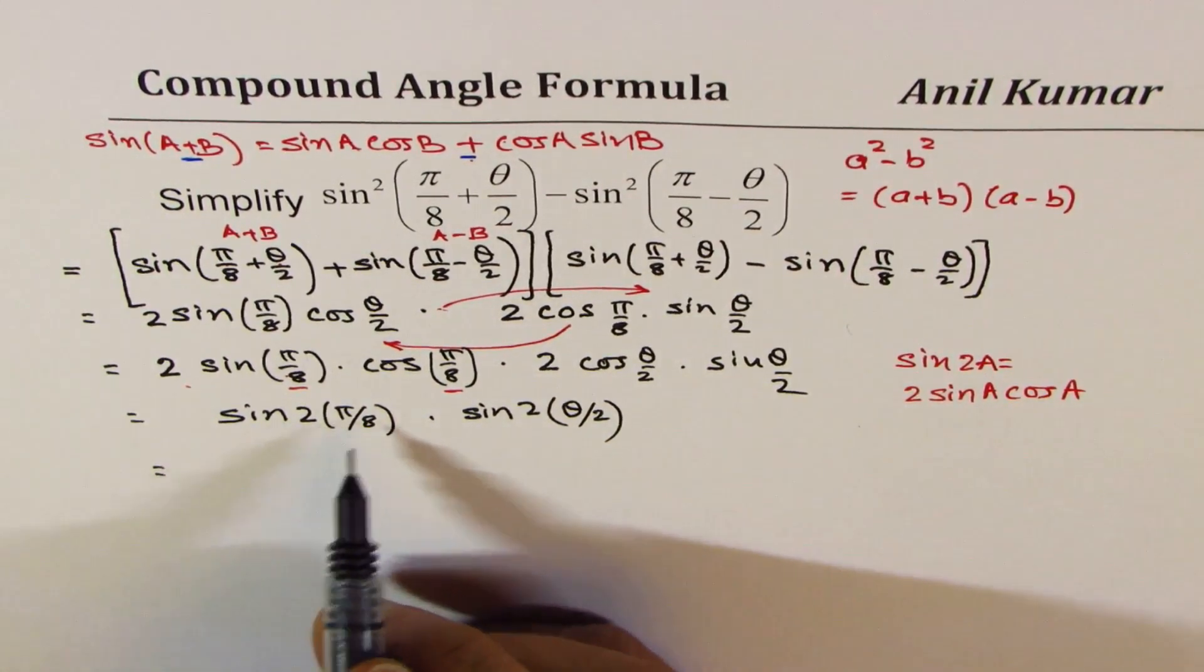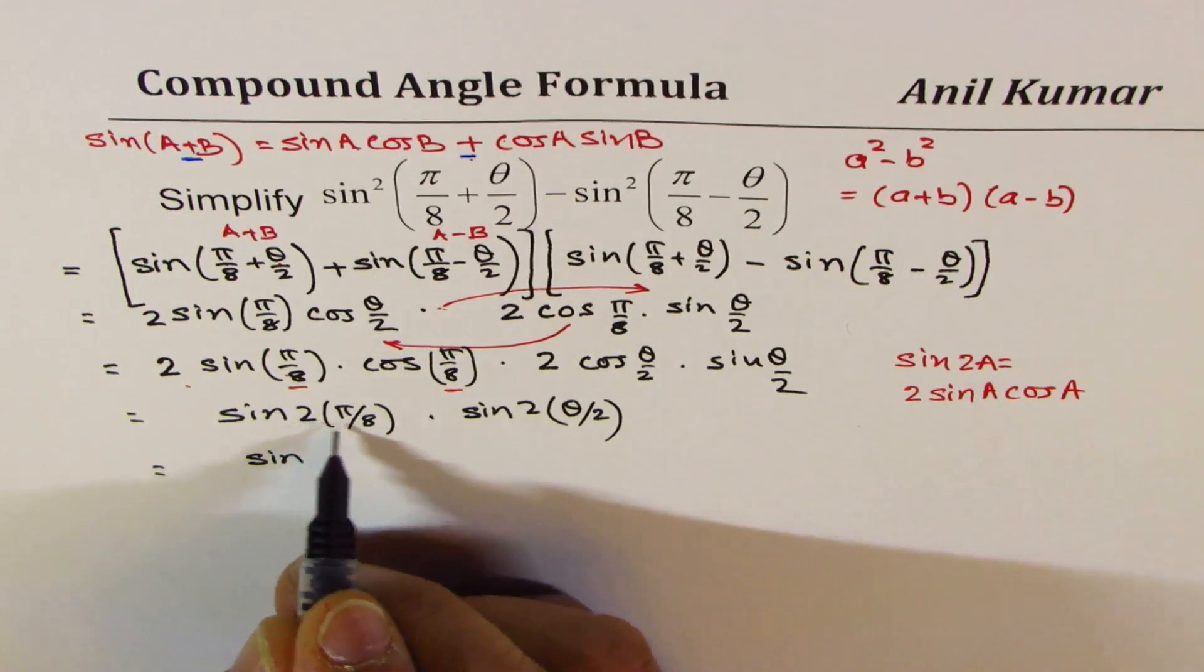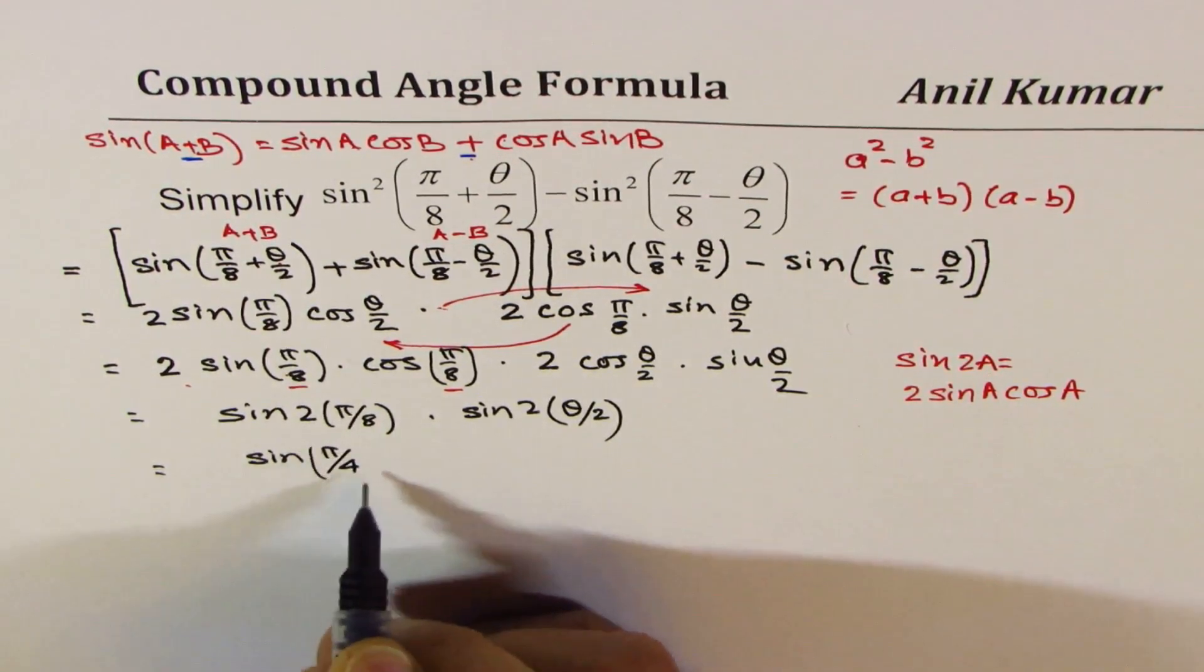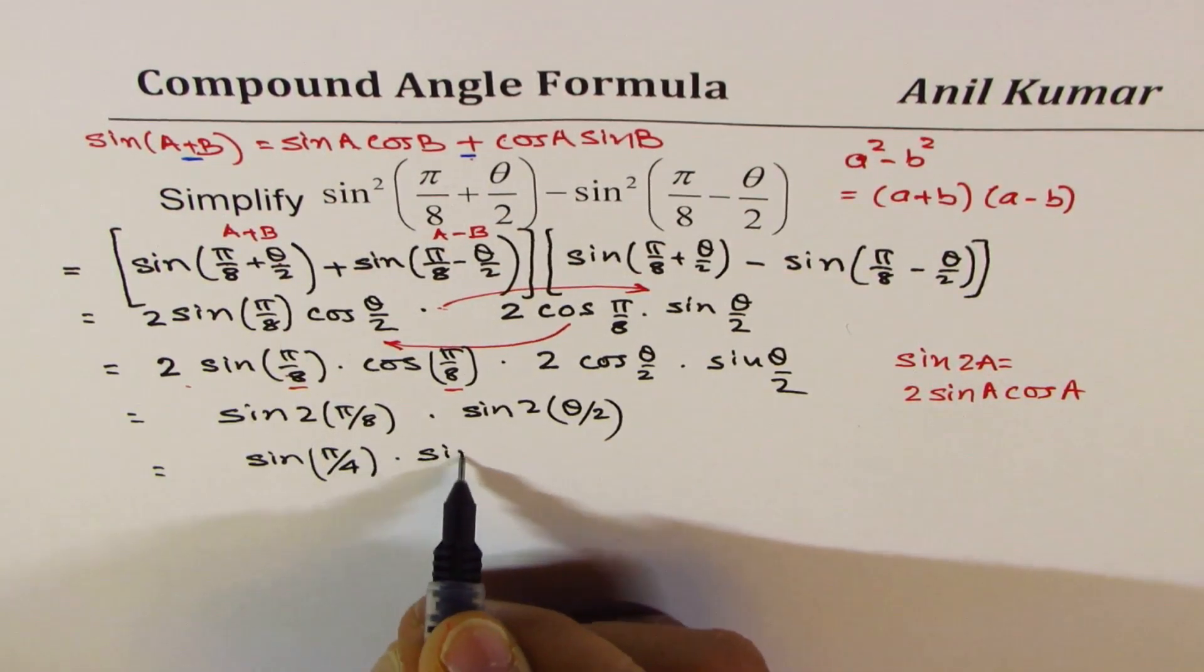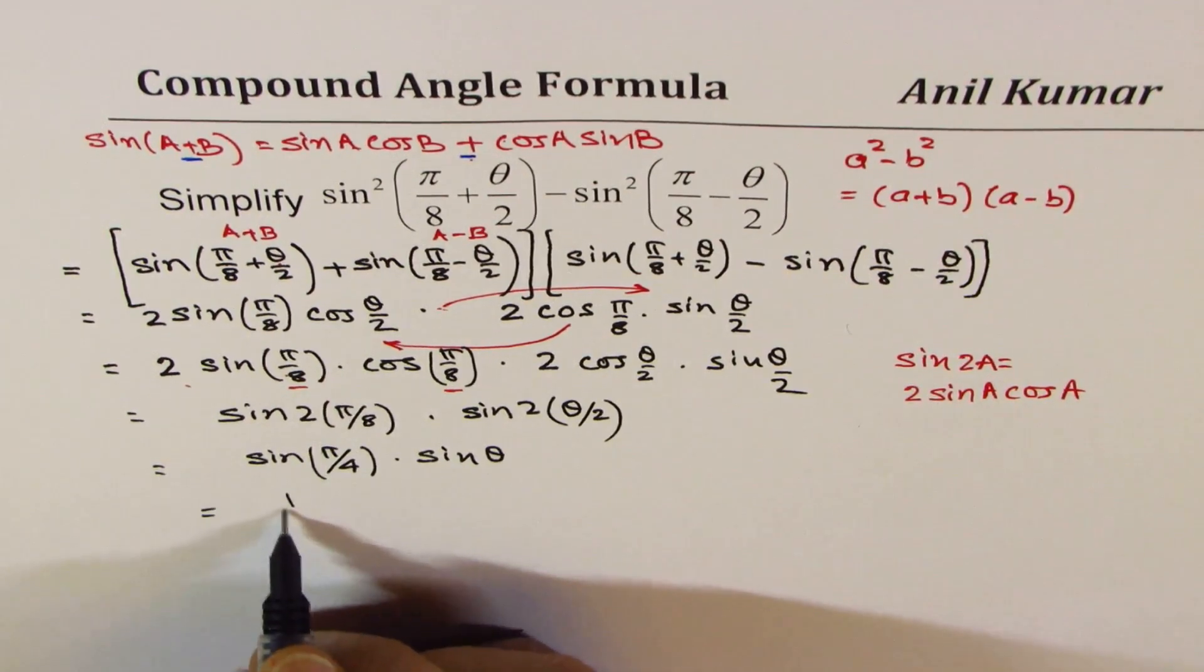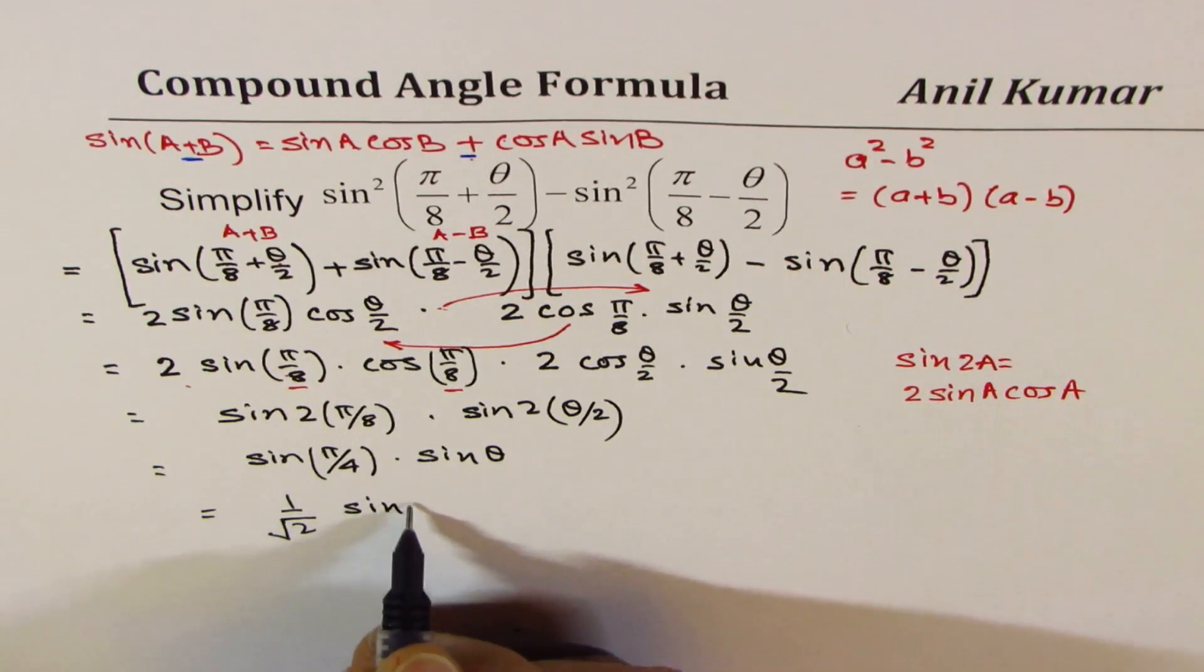Now, what is this? This is sine, a divided by 2 will be 4. Write this as π/4, and here we have sin(θ). And sin(π/4) is 1 over √2 times sin(θ).